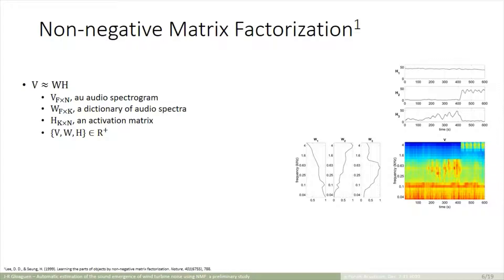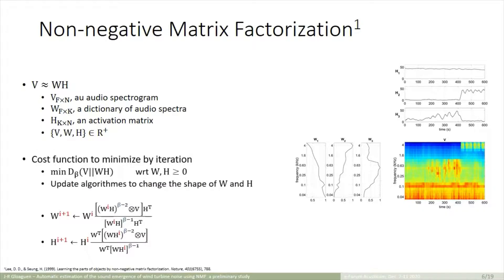And H is an activation matrix which represents the temporal variations of each spectrum. Each of these matrices is non-negative, which means that only additive combinations are possible. The approximation is done by minimizing a cost function, which is expressed as the beta divergence between V and the product, W, H. And an iteration process makes it possible to converge to a solution with update algorithms that change the shape of W and H, which depends on the choice of the beta divergence related to the choice of a beta value that we can see in the expression.